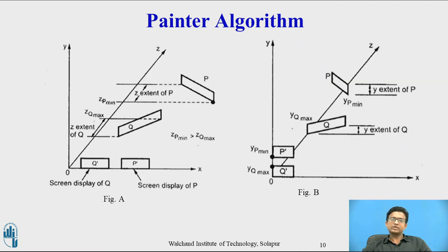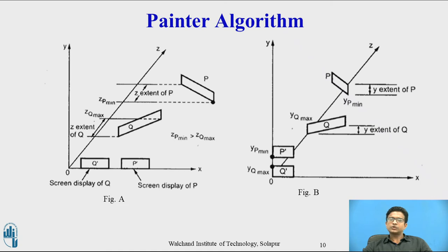In the diagram, figure A shows where the Z-extents of P and Q do not overlap — that is, ZQ max is less than ZP min — and also shows how the objects are displayed on the screen with the screen display of Q and P.